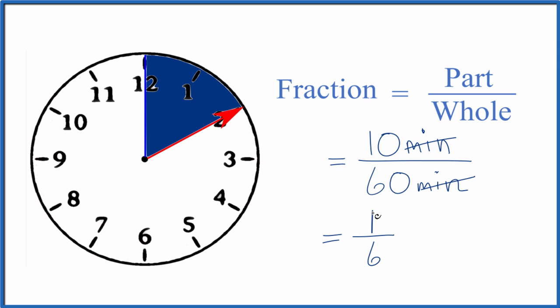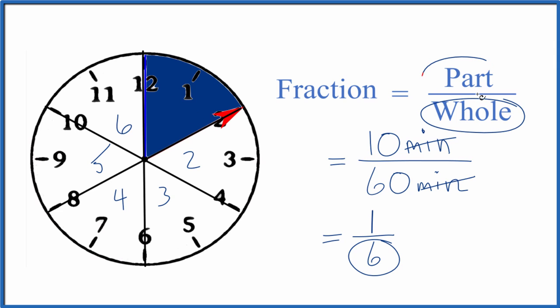So each piece here is 10 minutes. Here's the part we colored in, and we have one, two, three, four, five, six—so we have our six pieces. That's the whole thing, and the shaded part, that's the one. When we take 10 minutes and convert it to a fraction, it's 1/6 of an hour.